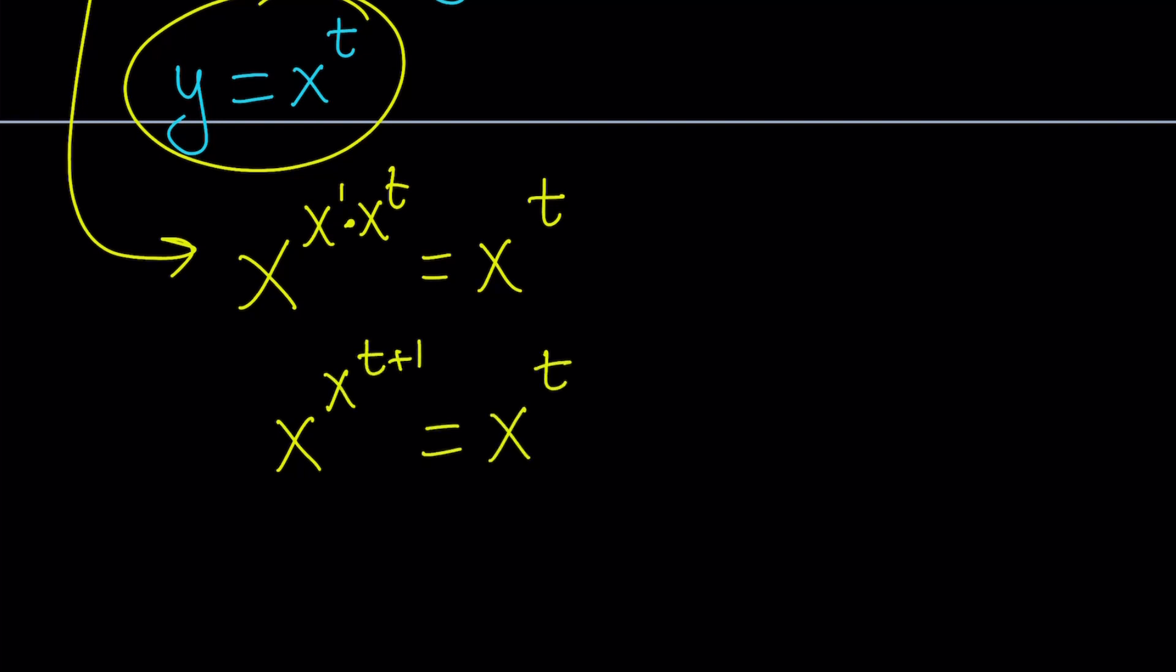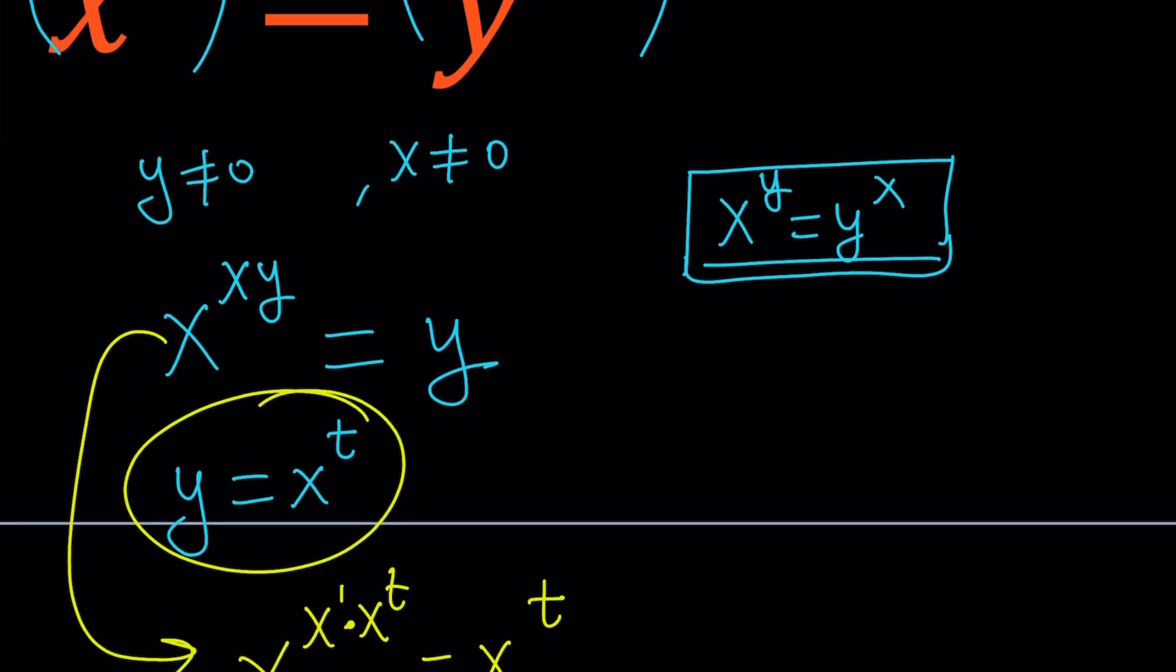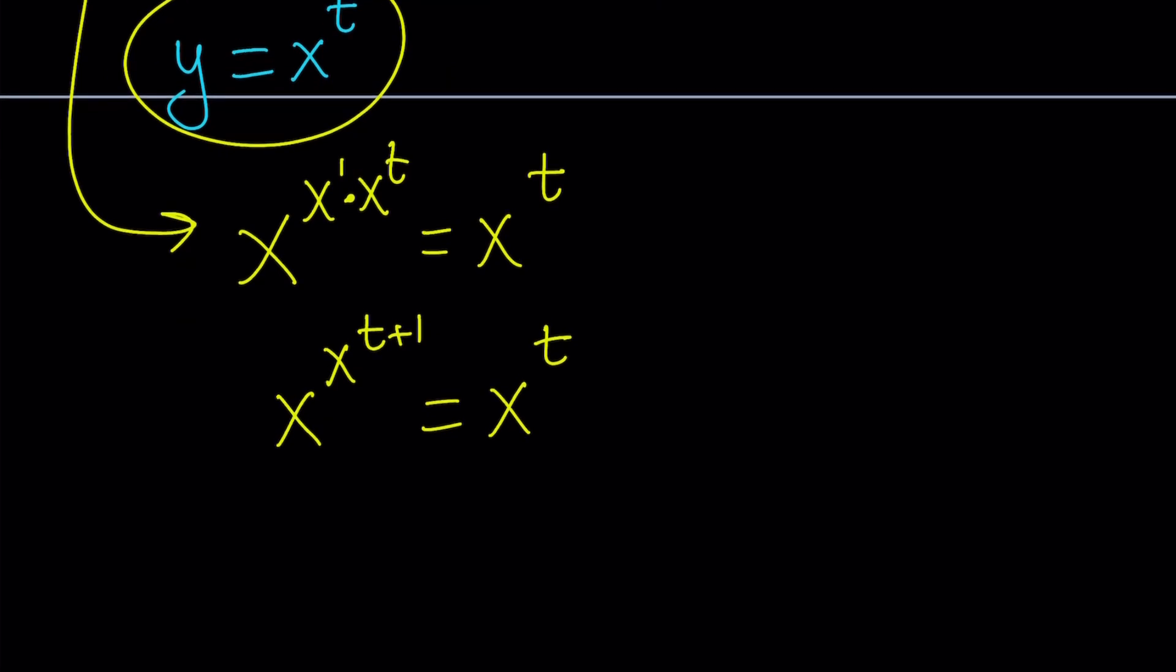Now let's talk about special cases. For example, x equals 0. Forget it. We said that x cannot be 0. Great. x equals 1. Okay. If x is 1, this is going to be satisfied, right? Well, 1 equals 1.